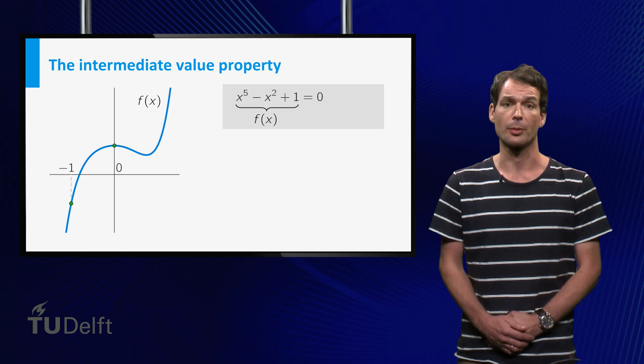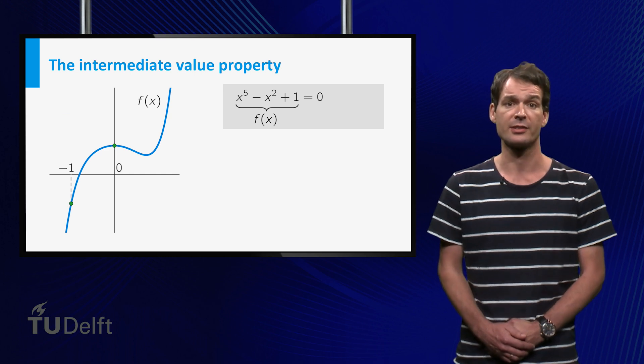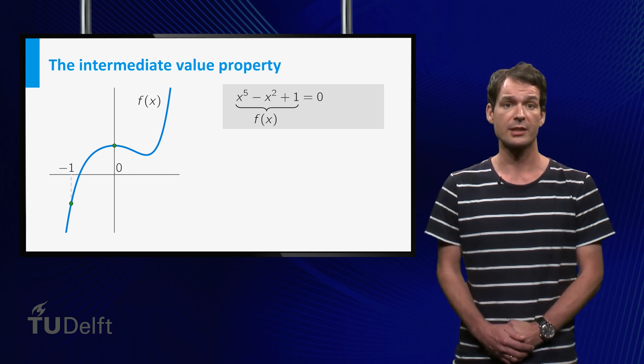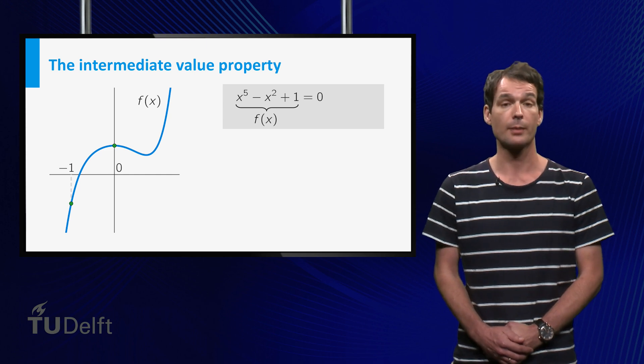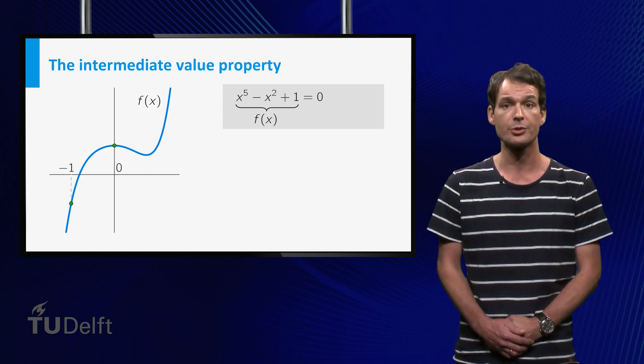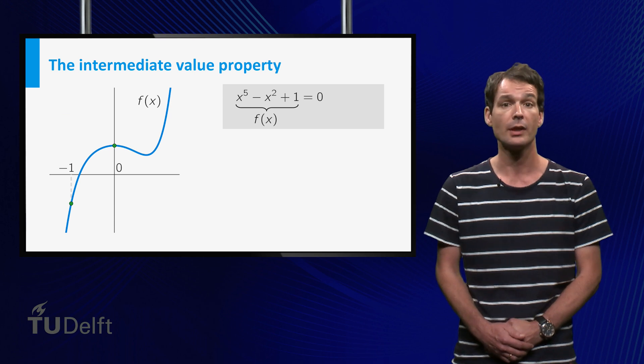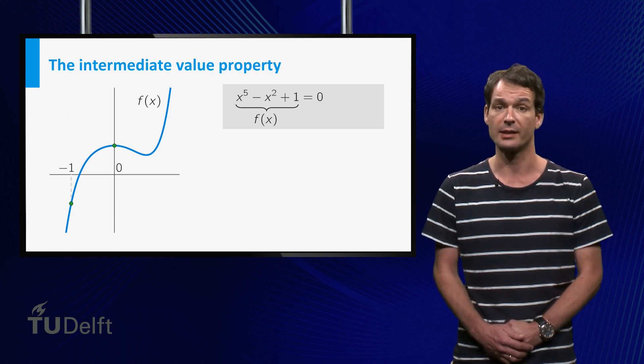The intermediate value property guarantees, for instance, that the equation x to the power 5 minus x squared plus 1 equals 0 has at least one solution on the interval, even though we cannot calculate it exactly.